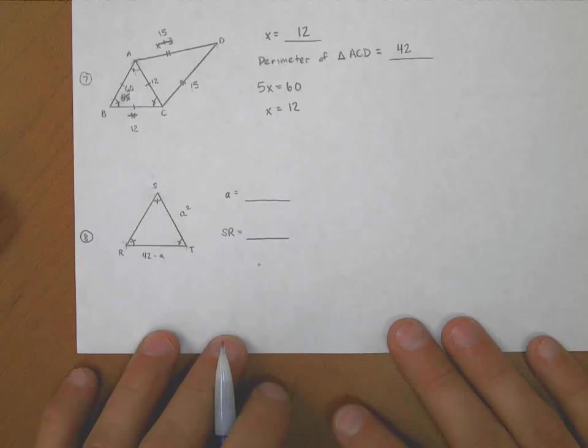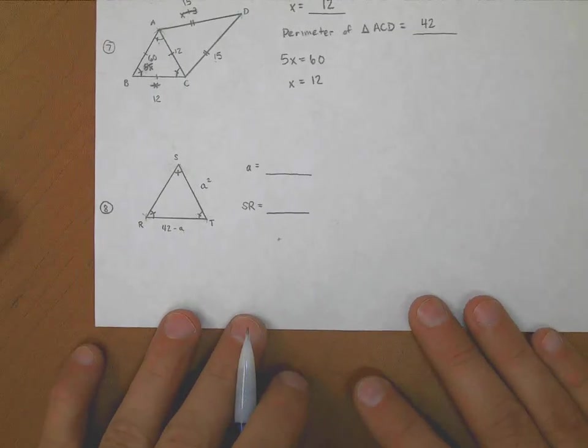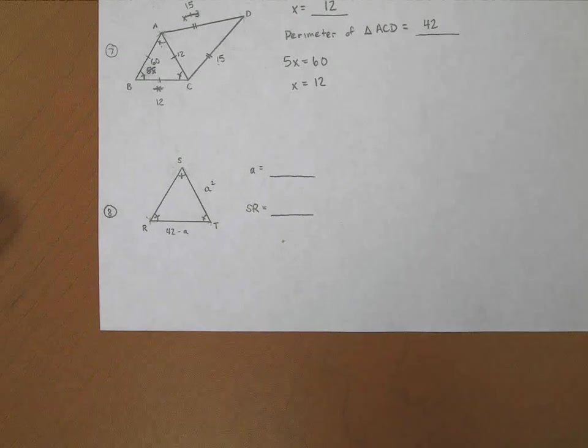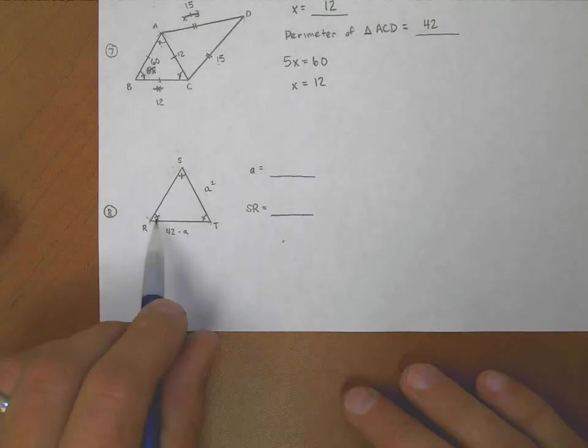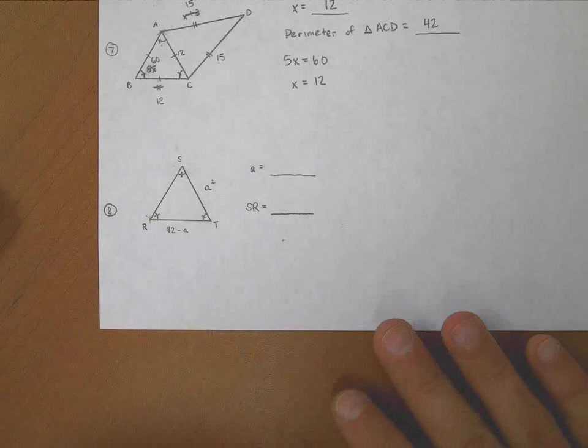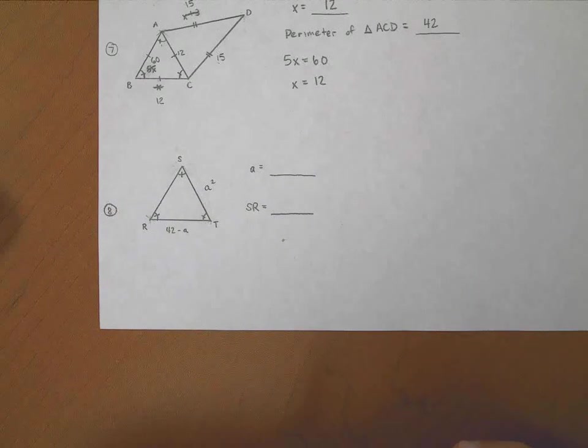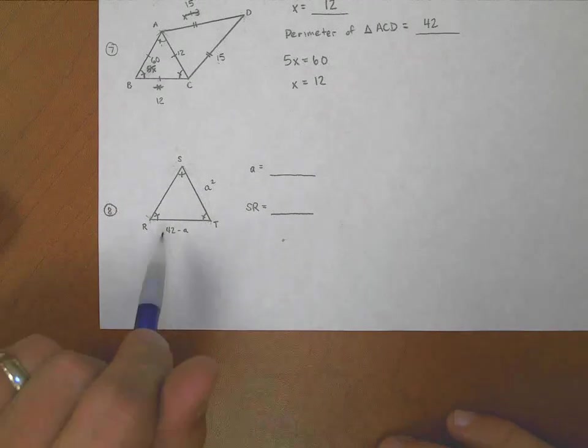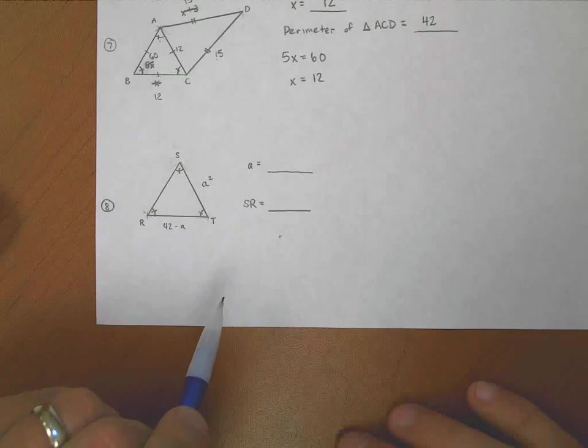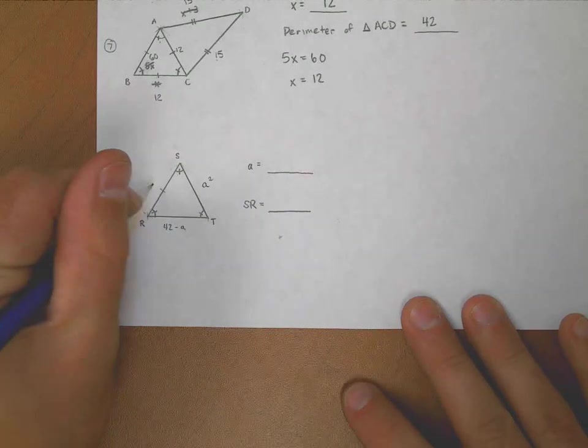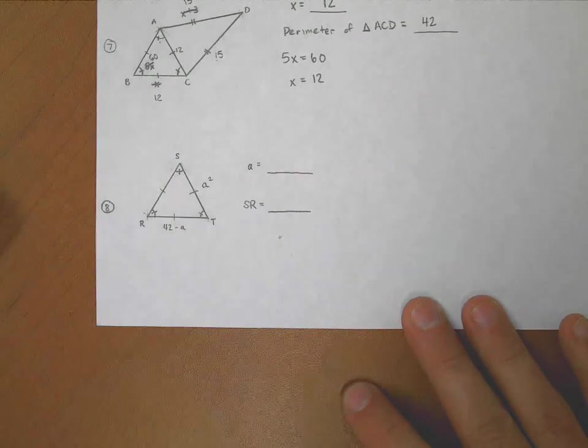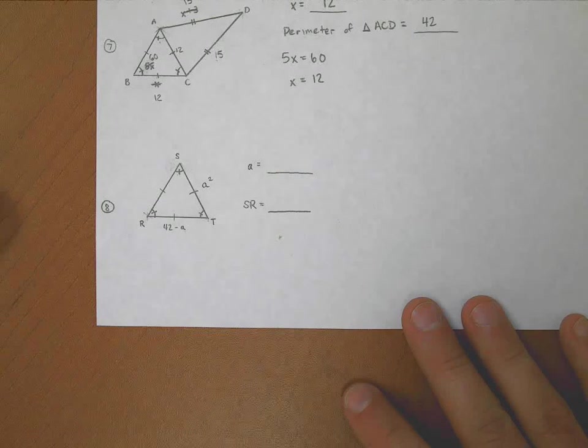Last problem, the tough one. I have an equiangular triangle here. So I know then because of these tick marks that all three of these angles are 60 degrees. But the nice thing is, I also know that if all three of these angles are the same, that means the sides are all the same. I could go through and put tick marks here and here and here if I wanted to.